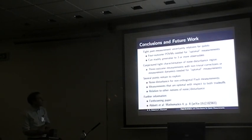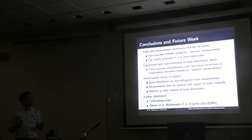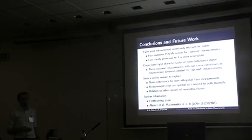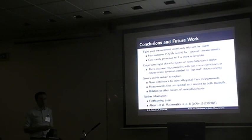To summarize: for joint measurement noise-noise relations, optimal measurements require four-outcome POVMs in general and give a convex region. This can be generalized to three or more observables using preparation uncertainty results. For noise-disturbance relations, three-outcome measurements suffice, but non-trivial measurement dynamics are needed. In both cases, highly non-projective measurements are needed to saturate the trade-off.